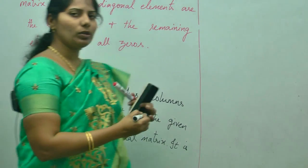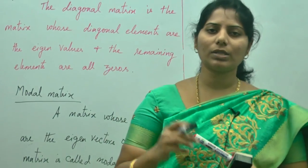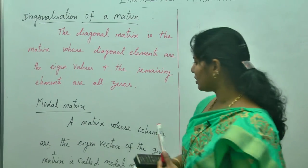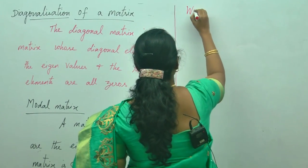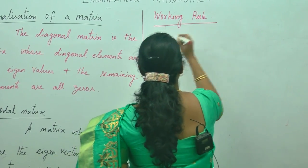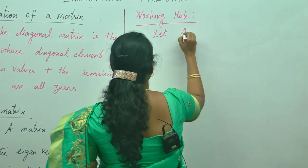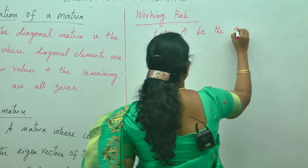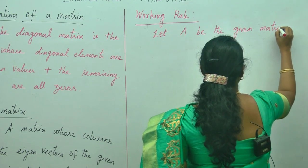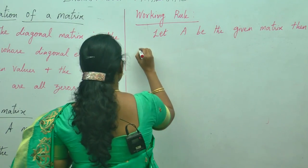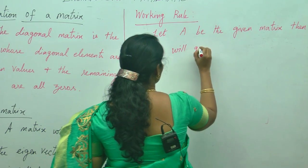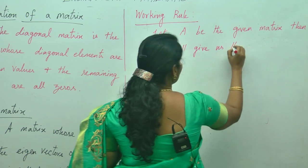So what is the working rule here? First, you need to find the eigenvalues, then the eigenvectors, then form the modal matrix, find the inverse of the modal matrix, and finally compute the product. Let A be the given matrix. Then B inverse AB will give us the diagonal form of the matrix.